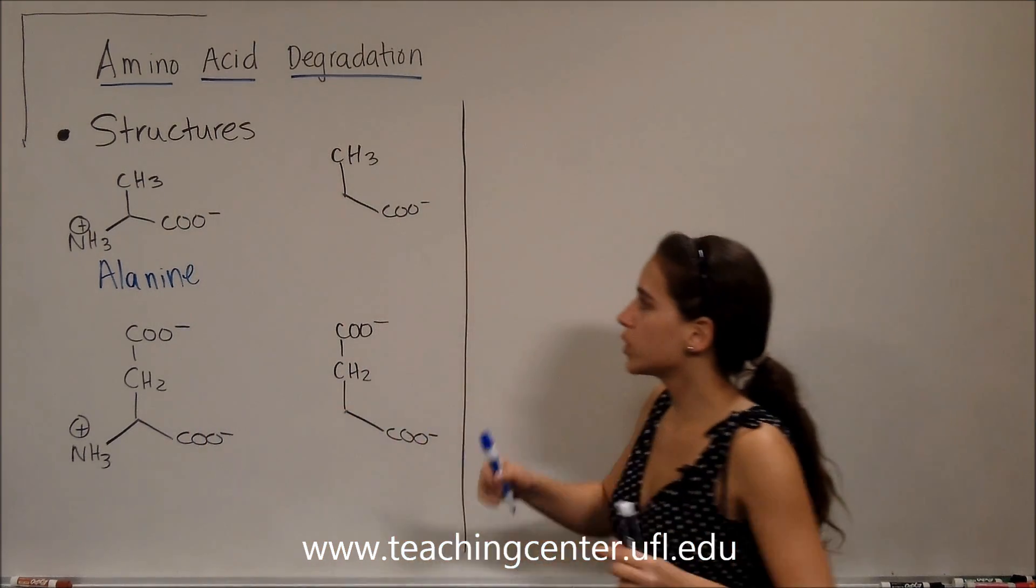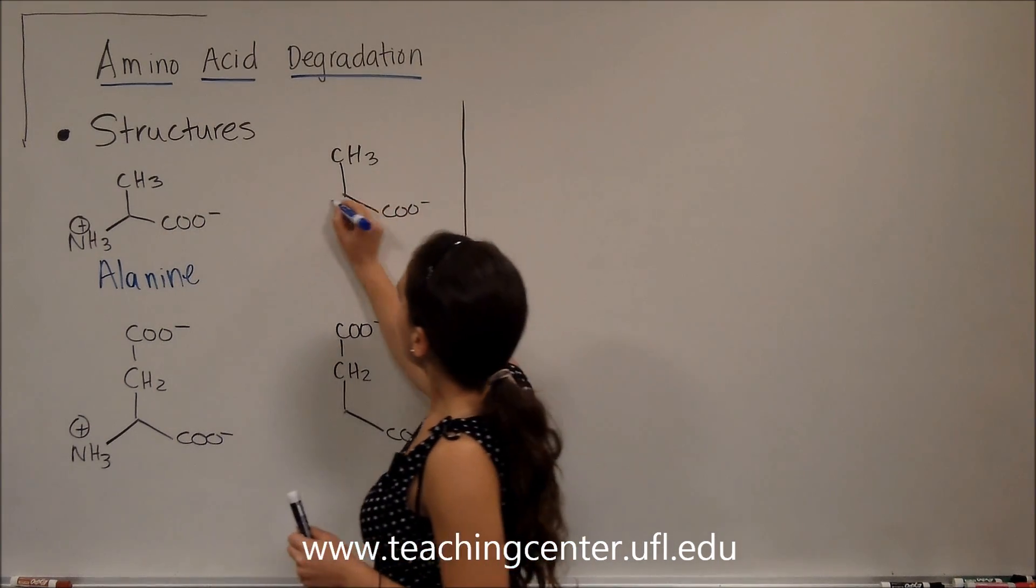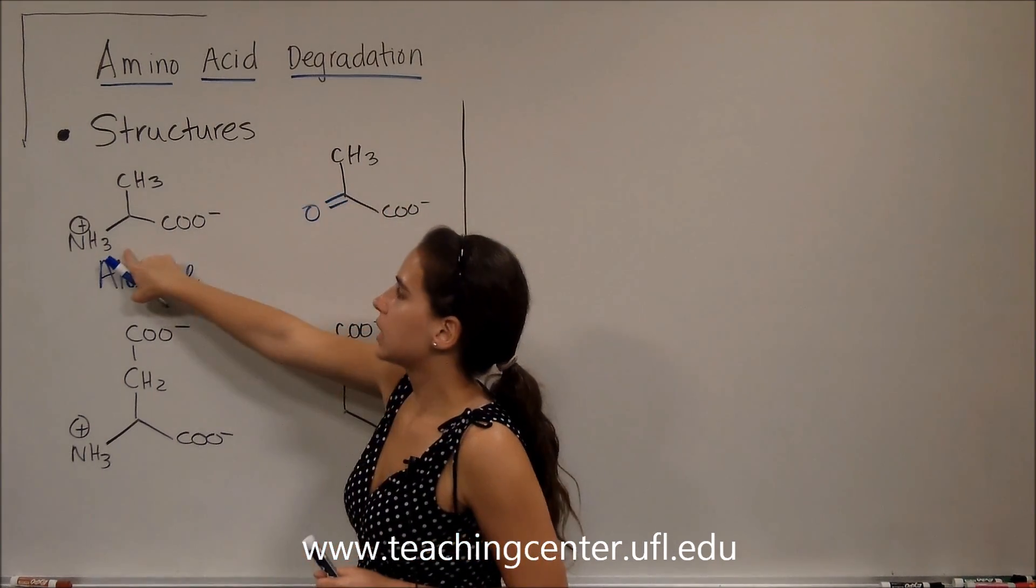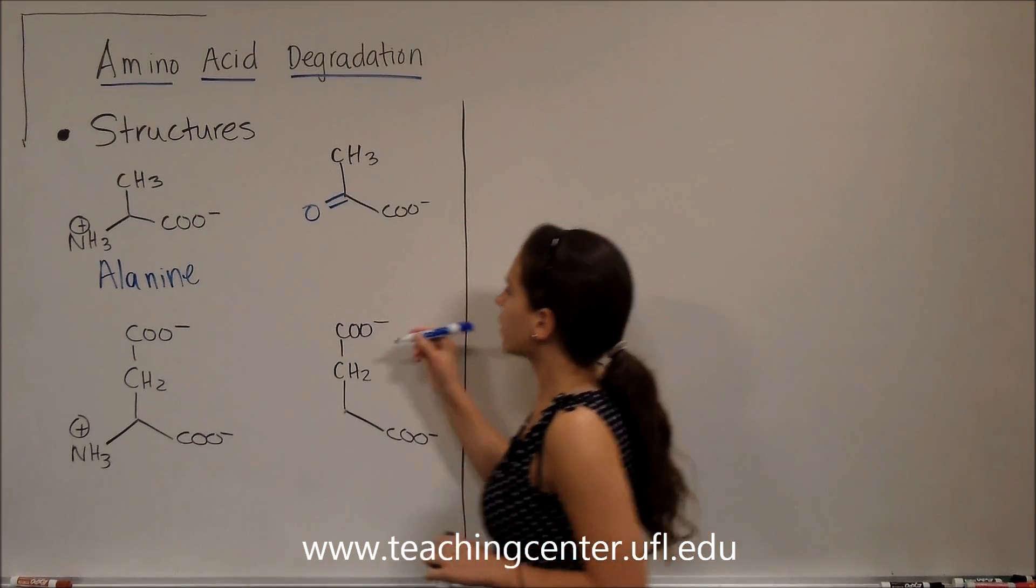What I want to show you here is that if we use the same backbone and we just add a double bond O instead of that NH3, we're going to get something that we're very familiar with, and that is pyruvate.